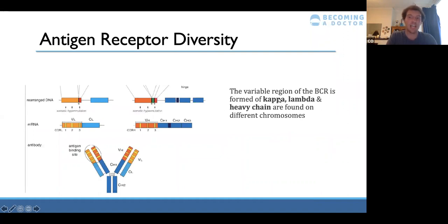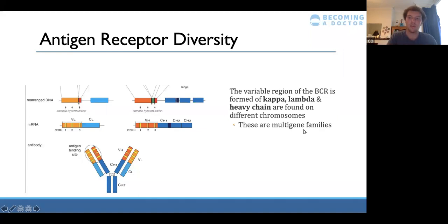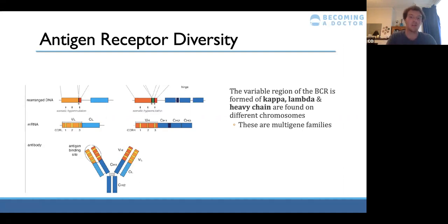The variable region is a multi-gene family — it has different loci on different chromosomes, which is what we mentioned about being polygenic. You take different bits from each of these loci from different chromosomes in a random combination, which is what allows you to get 10^10 different types of variable region.